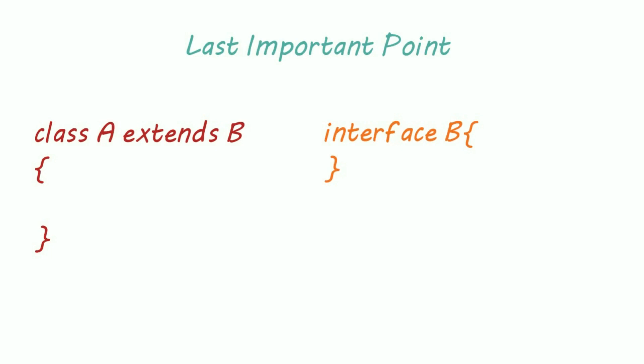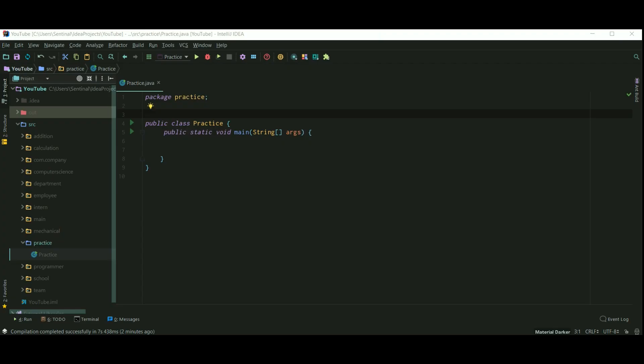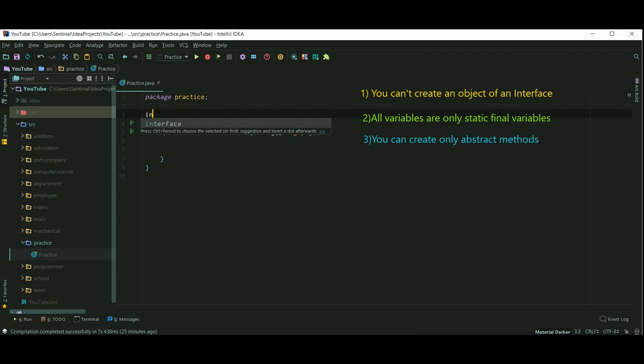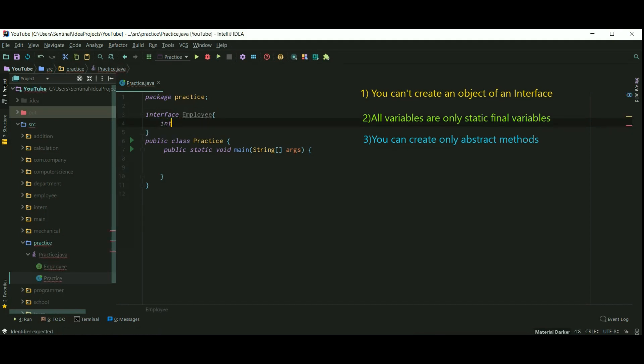Let's understand this better on our IDE. Let's summarize what we just learned. You cannot create an object of an interface. Let's first create an interface as Employee with an integer as base salary as 5000 and the method as display salary.